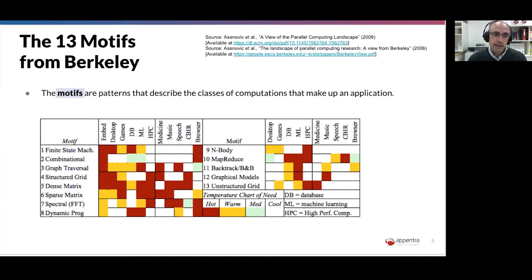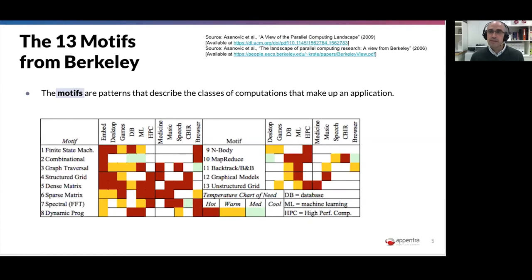The color coding in the chart highlights which motifs are more relevant for a given domain. For instance, in high-performance computing, it is very relevant to have structured grids, dense and sparse matrix computations, and spectral computations like FFT, as well as unstructured grids. These are types of computations and codes that we usually discuss how to parallelize. These 13 motifs are a really good tool to describe science and scientific codes.